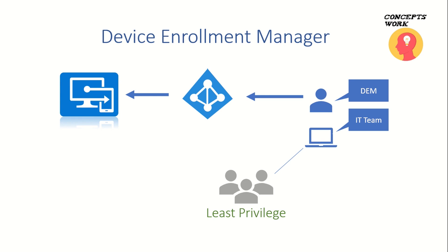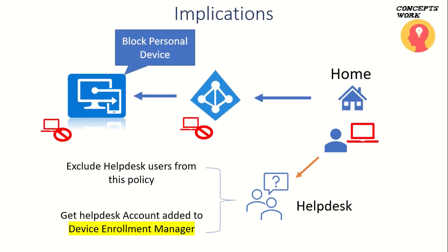Another use case is when a user has unenrolled a device and you have a block personal policy in place — in this case also you can use a DEM account to get the device onboarded. There is a very simple fundamental behind this: when a DEM account is used to onboard a machine, the ownership of that particular machine is by default treated as corporate owned. That covers the theoretical part of how DEM works — let me switch to my browser where I've signed in as global admin.